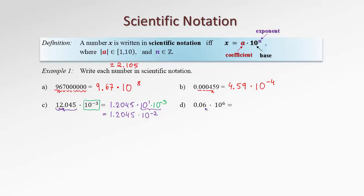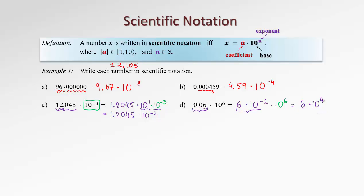Let's try one more example. Again our coefficient doesn't satisfy the condition of scientific notation. We need the first non-zero digit, which is 6, then place a dot — and actually we don't need to write anything after it, because there's no significant digit there. Then we fix this by multiplying by a certain power of 10. This number is the same as 0.06. Since the dot is placed after 6, to recover the number I have to move it backwards two steps, so the exponent is negative 2. Copying the other power gives times 10 to the 6, and combining: 6 times 10 to the 4. This is already in scientific notation.